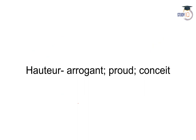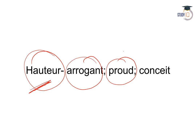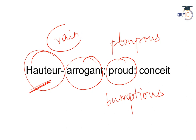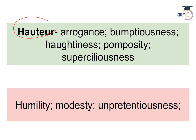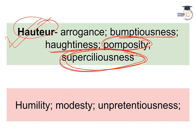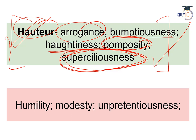The next word is haughty. Haughty shabd ka arth hota hai — aisa vyakti jo ghamandi hai, arrogant hai, proud hai, pompous hai, bumptious hai, vain hai, conceited hai. Uss vyakti ke liye hum haughtier shabd ka prayog karte hain. Important synonyms: bumptiousness, haughtiness, pomposity, superciliousness, arrogance. Antonyms: humility, modesty, unpretentiousness.